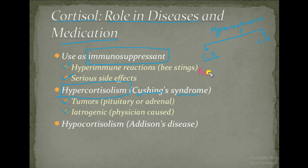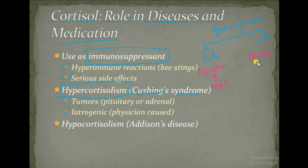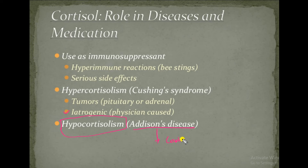Cushing's syndrome refers to hypercortisolism regardless of origin — whether adrenal or any other area. Cushing's disease specifically originates from the pituitary, where high ACTH levels lead to increased production of cortisol. Hypocortisolism is known as Addison's disease, in which cortisol levels are decreased.